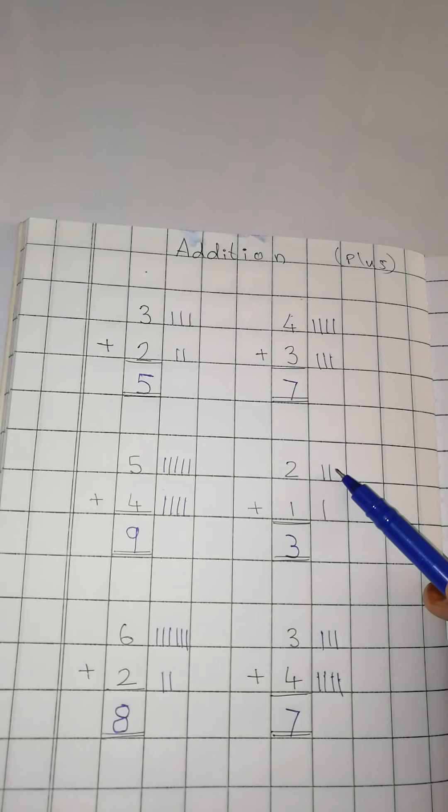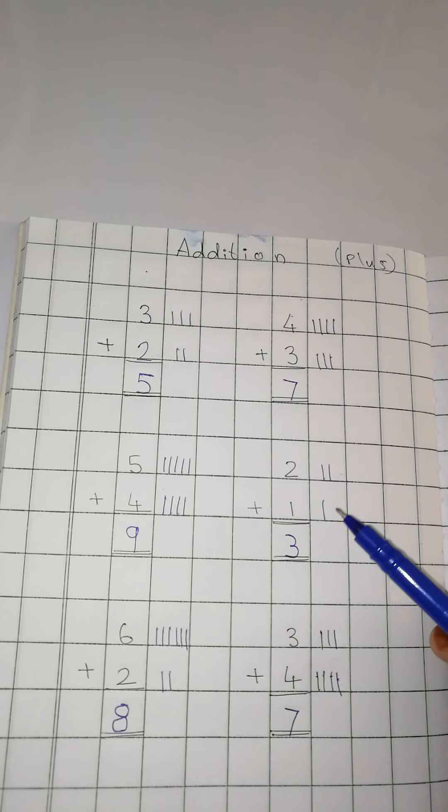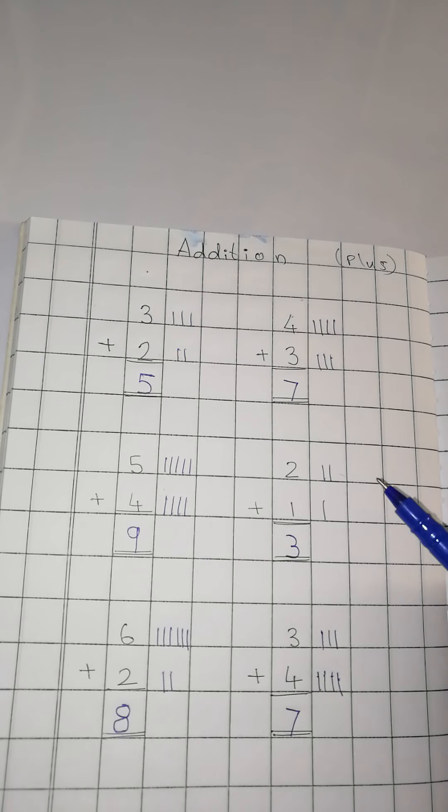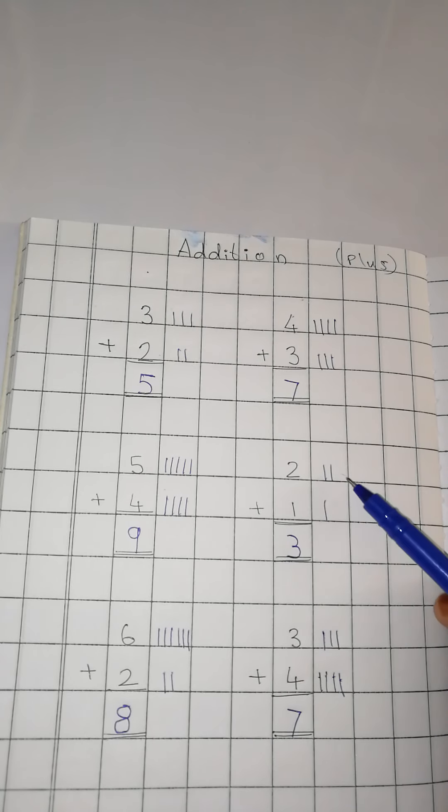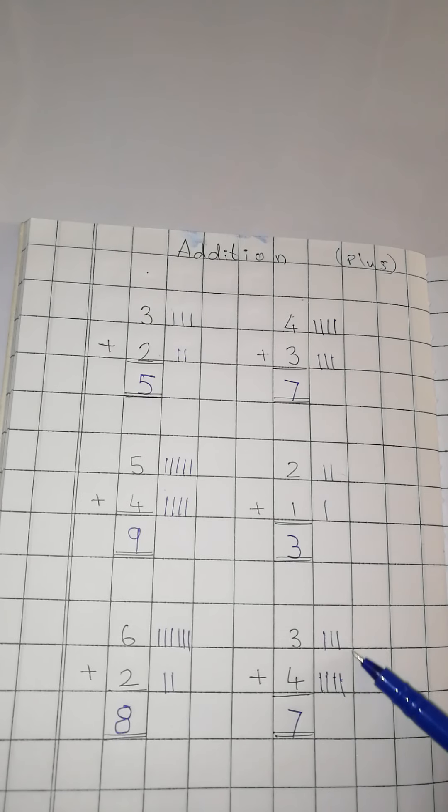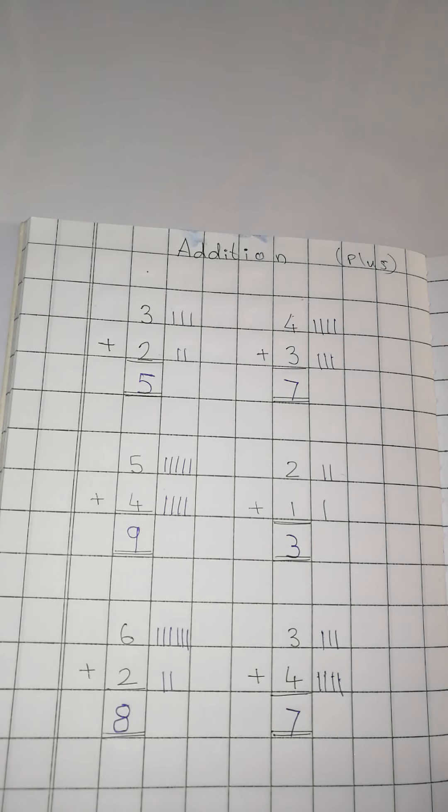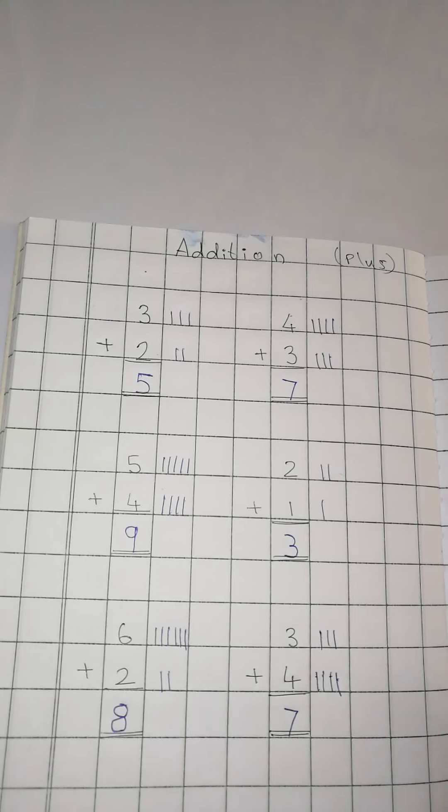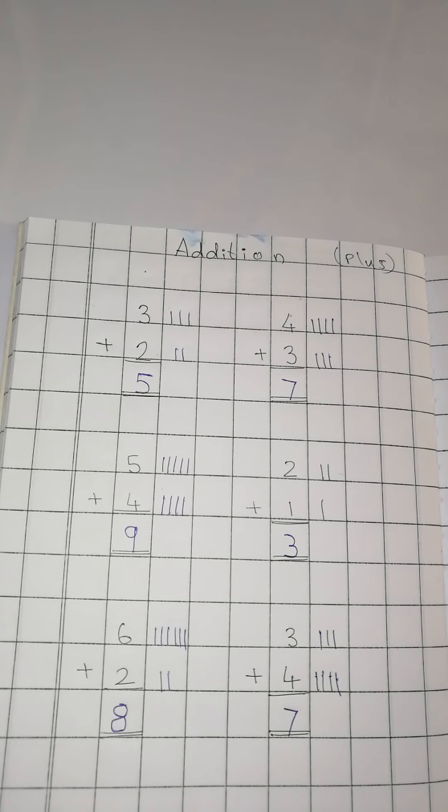Sirf upar jo number hai, phele utnei lines likhou. Niche jo number hai, utnei lines nikalou. Ya dot do. Aur all together total kitne lines hai? Woh puray total karke niche likhou. Easy children? Try solving the sums at your home and then show it to ma'am. I am waiting. Bye-bye children.